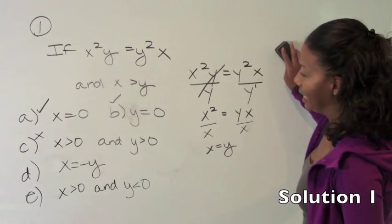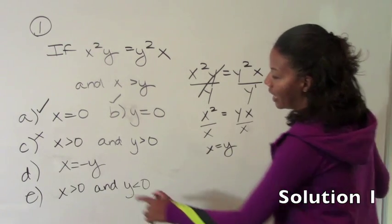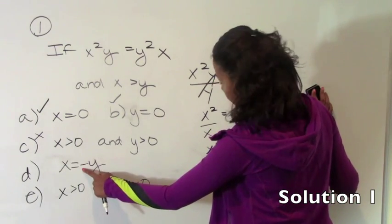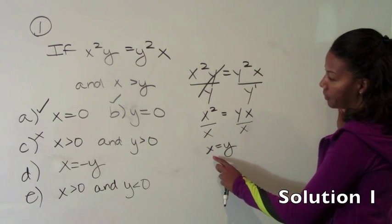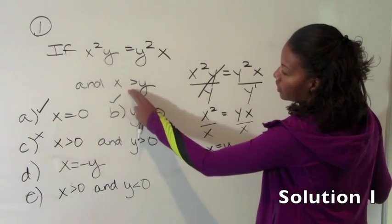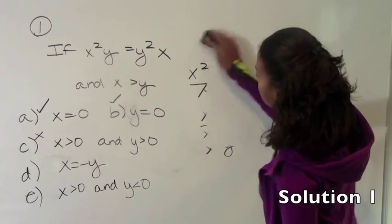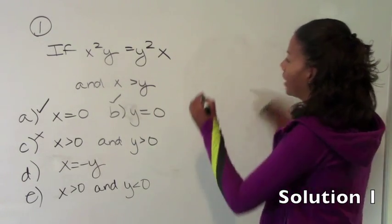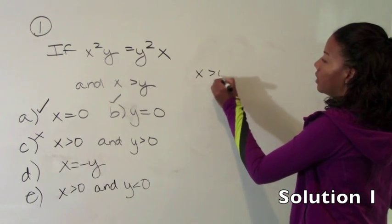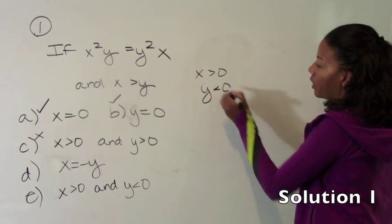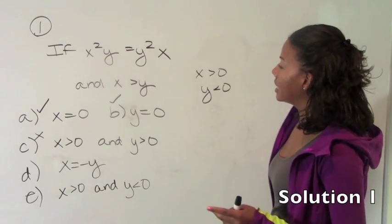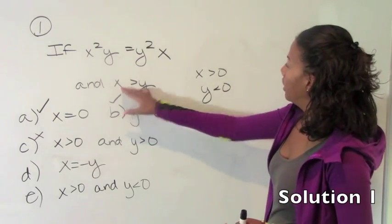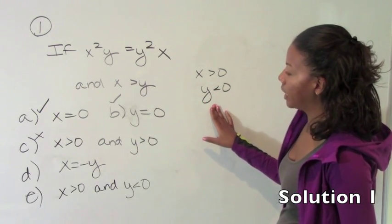Now we're going to look at d. d says that x has to equal the opposite of y. Here, we know, actually over here, it says x is greater than y. So if x has to equal the opposite of y, we know that x is positive and y would be the negative one. Because one number has to be positive and one number has to be negative. And since x is greater, x has to be the positive and y has to be the negative.